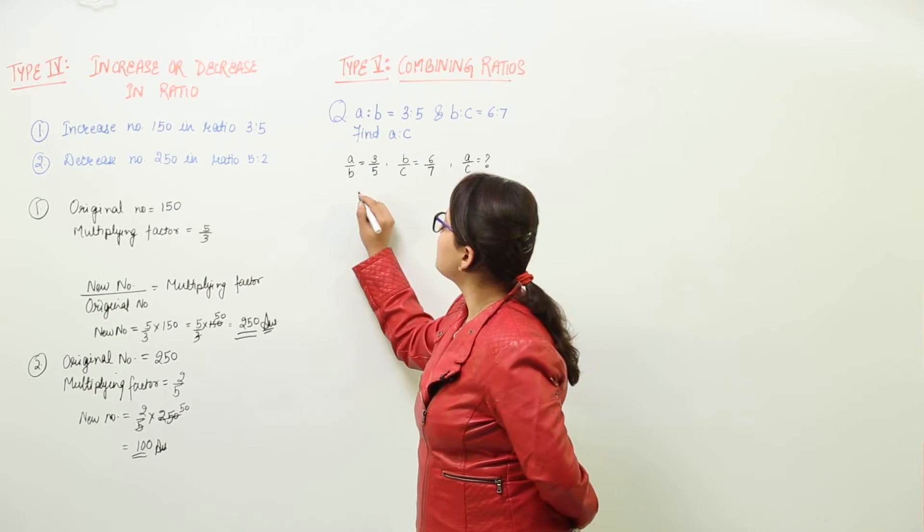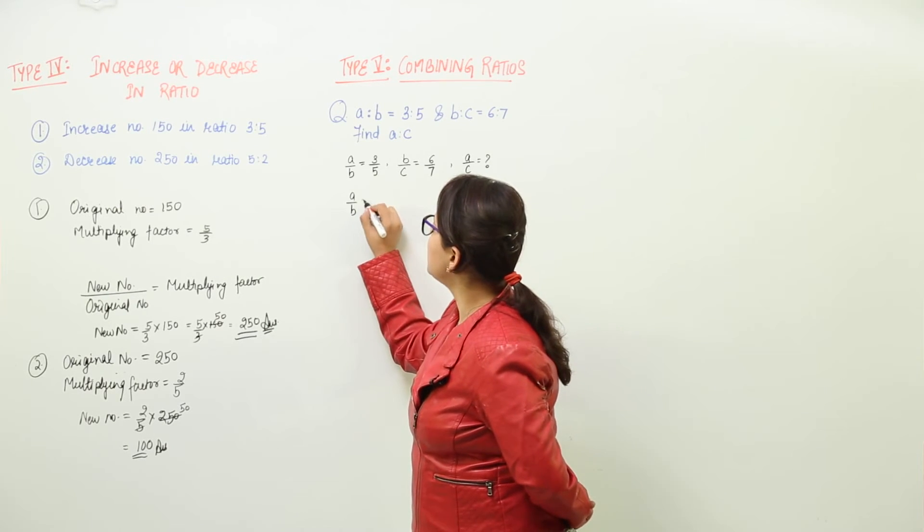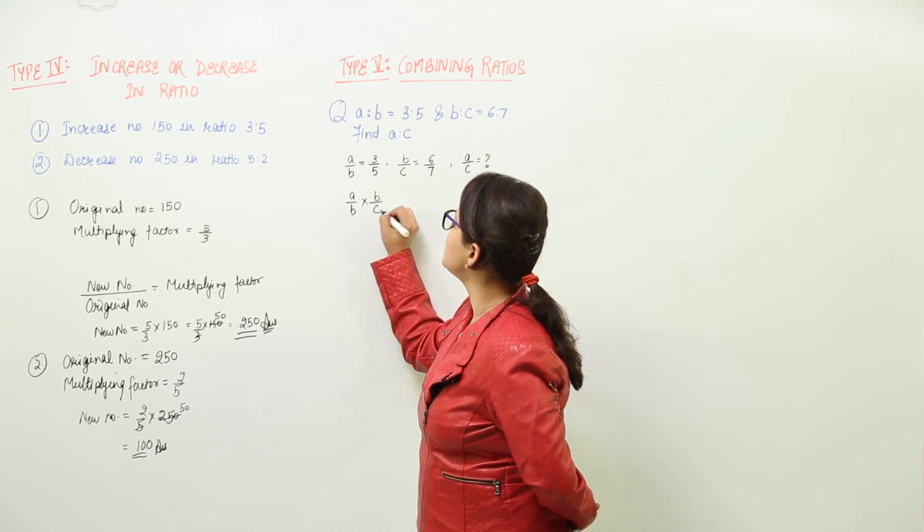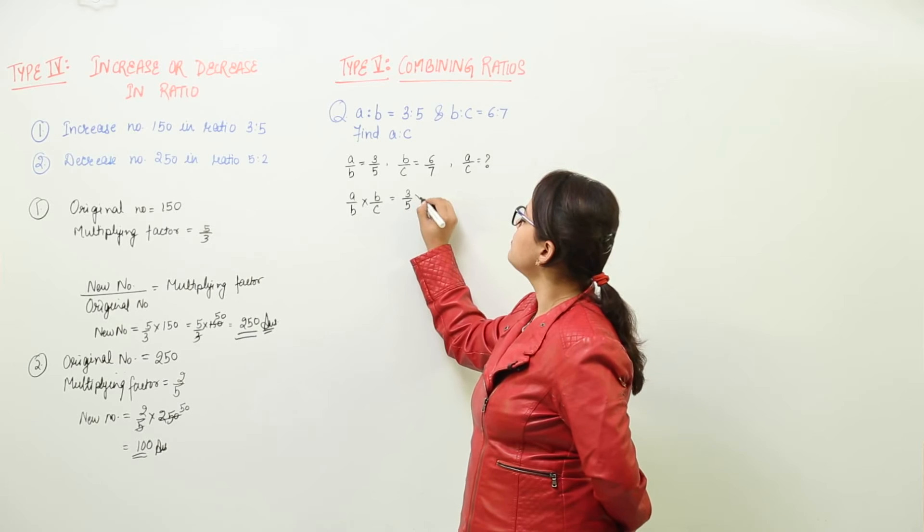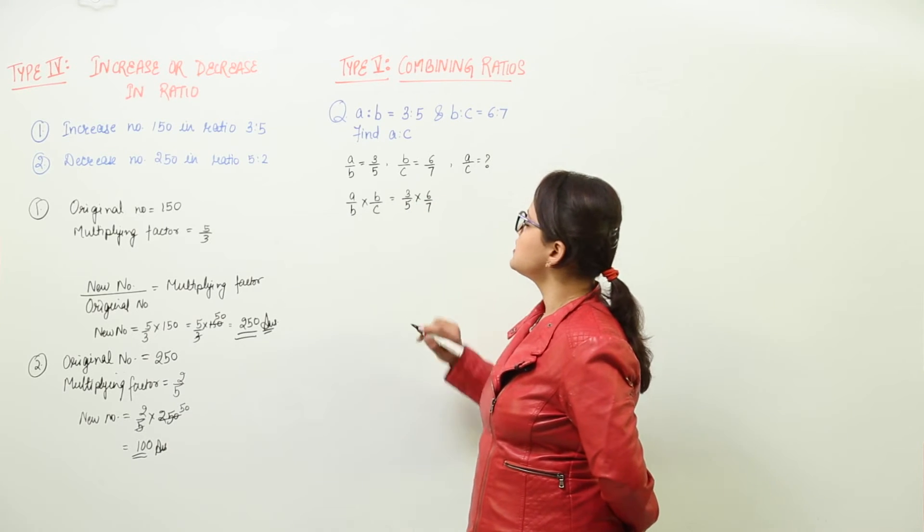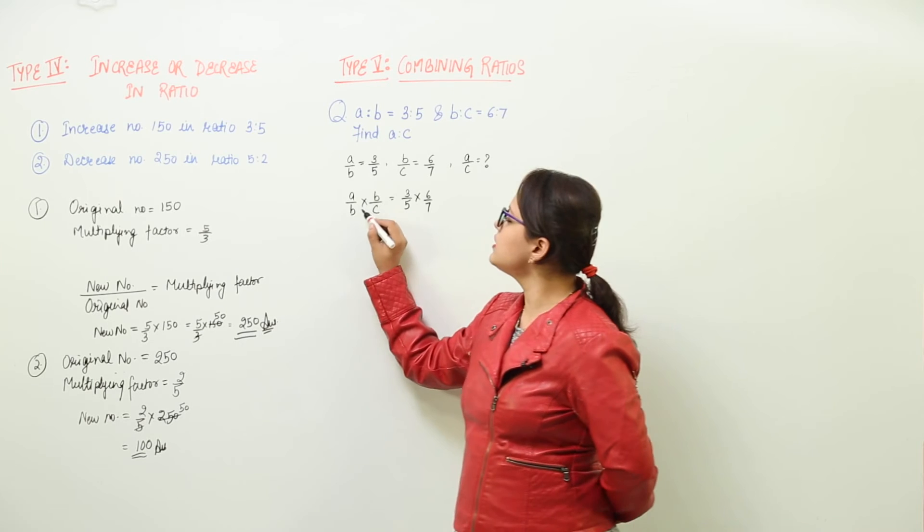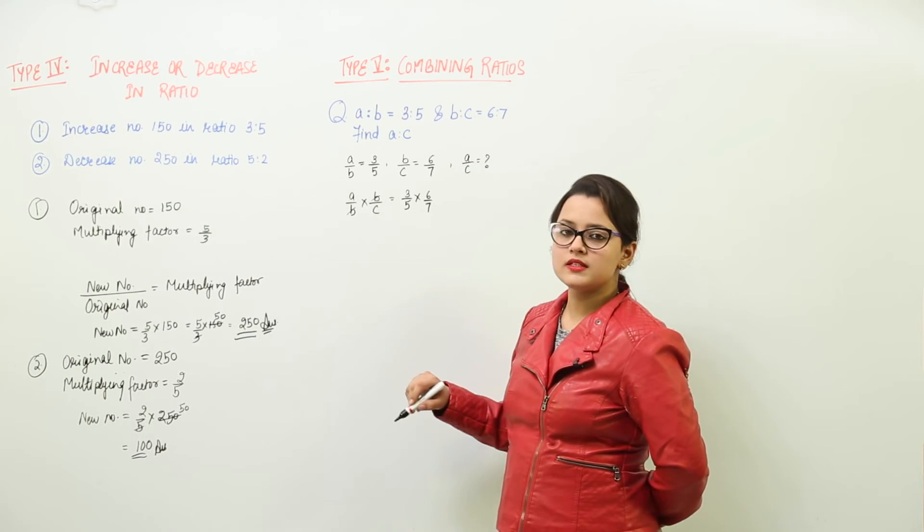If you multiply both of these, A upon B into B upon C, that means the right-hand sides will also get multiplied: 3 upon 5 into 6 upon 7. You can check over here, the B can get cancelled.